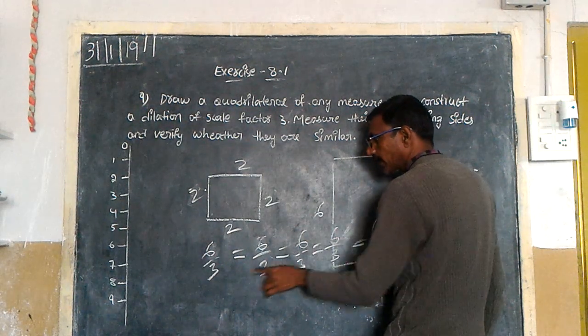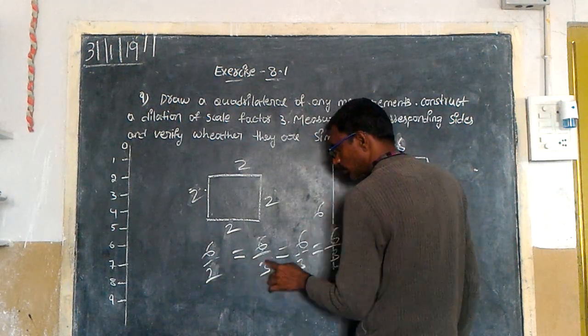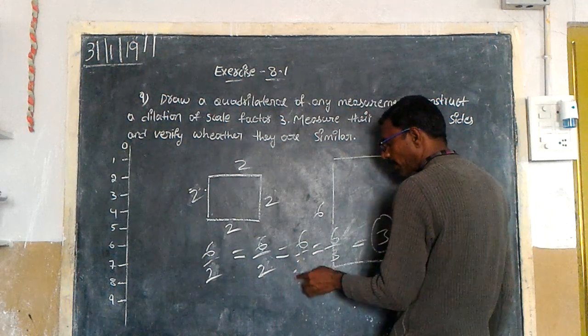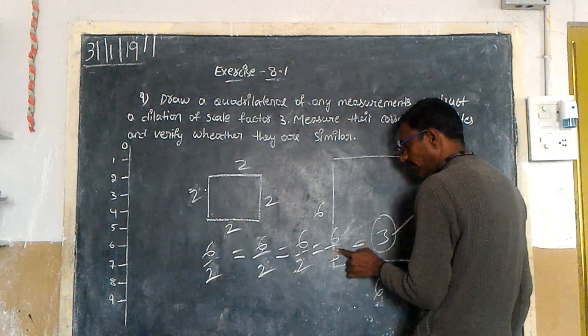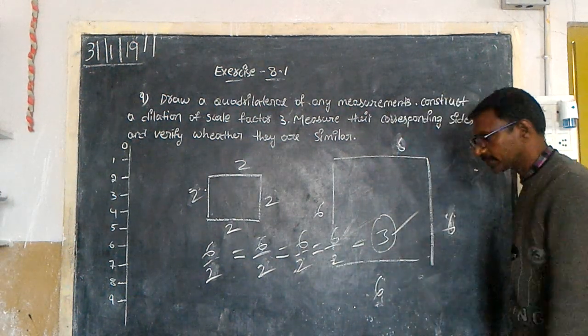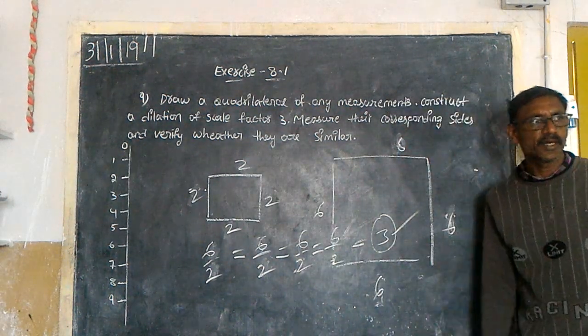Three times. Divided by how much? Two. Divided by two, how much will you get? Three. So the ratio is three.